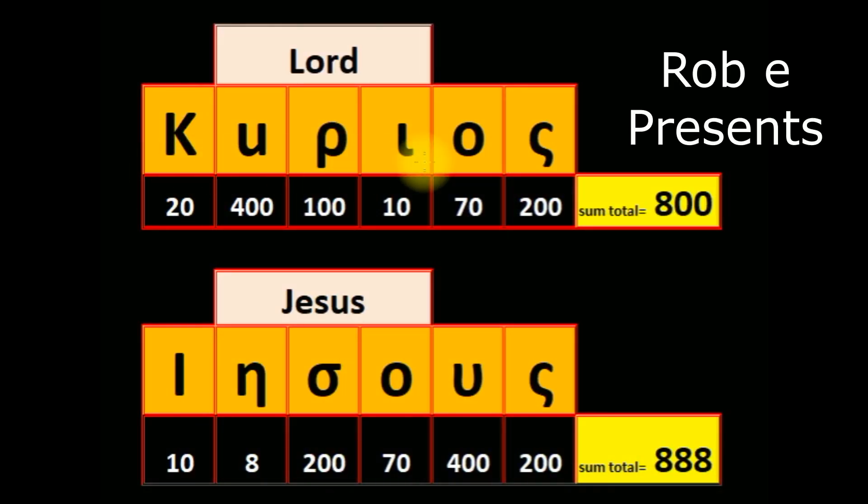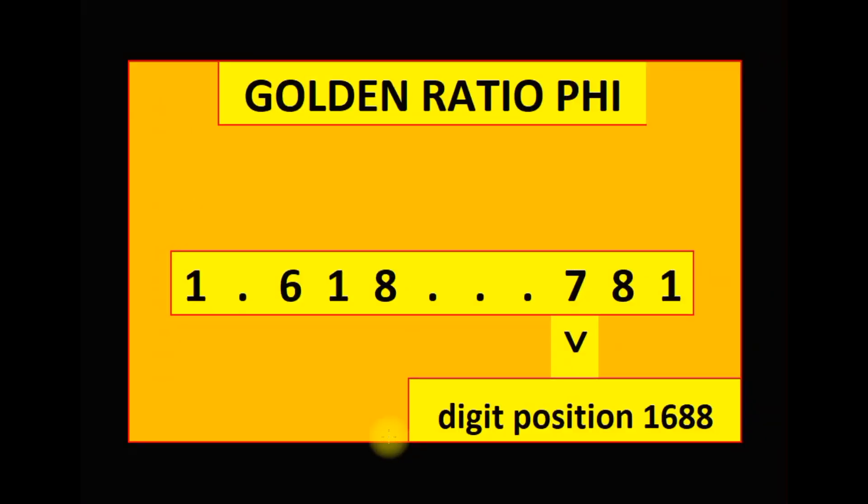In Greek, Kurios (lord) has a Greek sum total letter value of 800. Iesous (Jesus) has a sum total Greek letter value of 888. 888 plus 800 equals 1688, the golden ratio position.